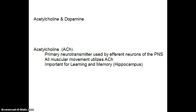Inside the central nervous system, ACH is important for learning and memory, and therefore we see a lot of projections in the hippocampus. This is a neurotransmitter that we see influenced by diseases like Alzheimer's disease, which we'll talk about later in the textbook.